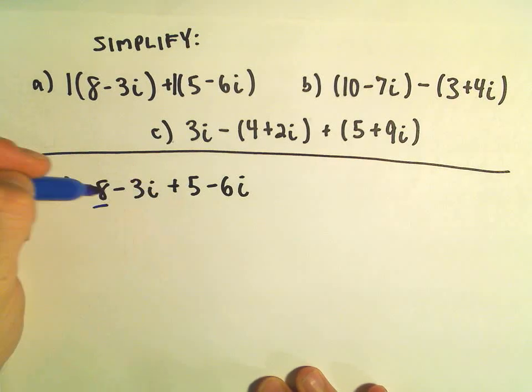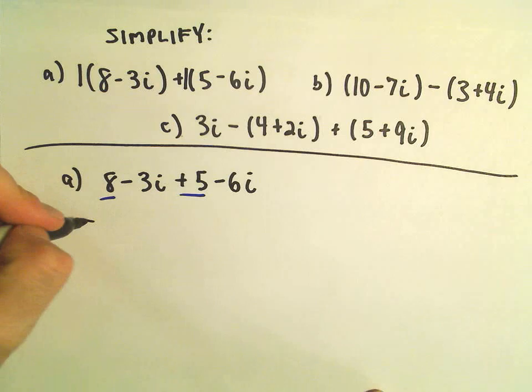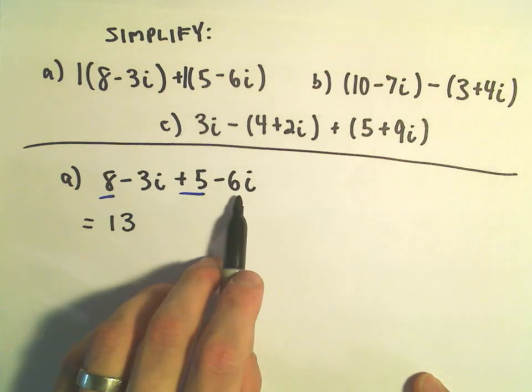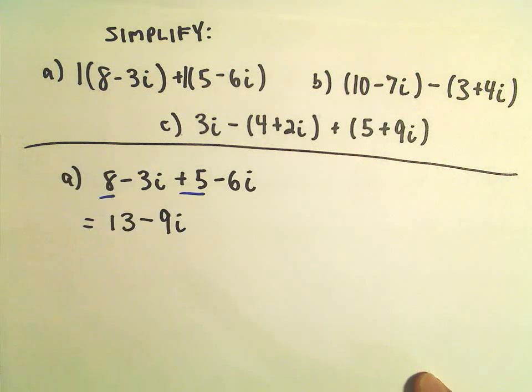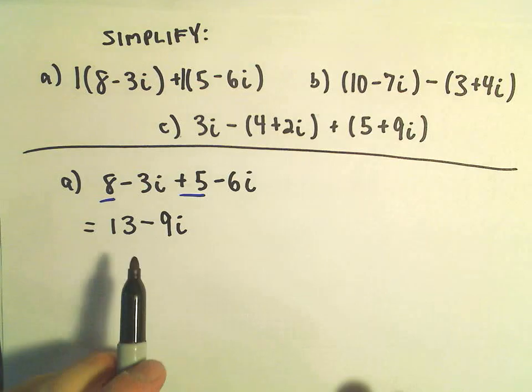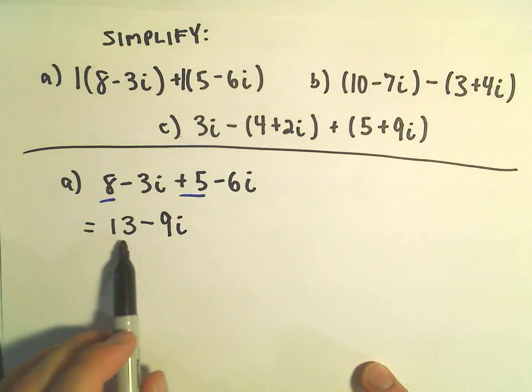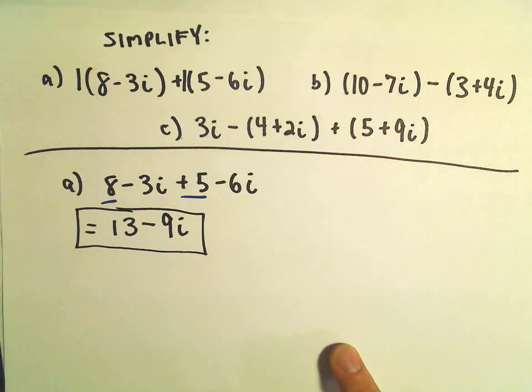So I've got a positive 8 and a positive 5. If I add those together that will give me a positive 13. We have a negative 3i minus 6i. If we combine that, we'll get a negative 9i. It's definitely normal to write the imaginary part second and the real part first. So this would be considered simplified and we would be done.